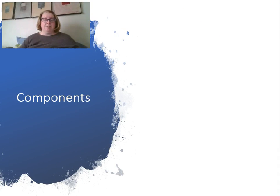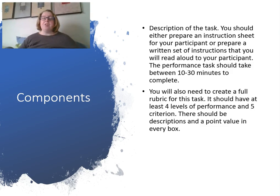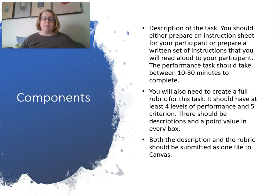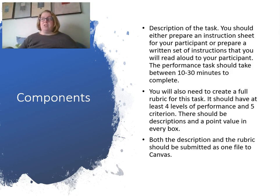Let's talk about the assignment itself. Your components: you should have some sort of description of the task — the task could be about 10 to 30 minutes to complete. You can either have a set of directions you would give your participant, or a written set of instructions like a handout. Then you're going to create a rubric with four levels of performance and five criteria, with descriptions and point values in every box. Submit both of those to Canvas in one file — two pages. That's the instrument due this week.